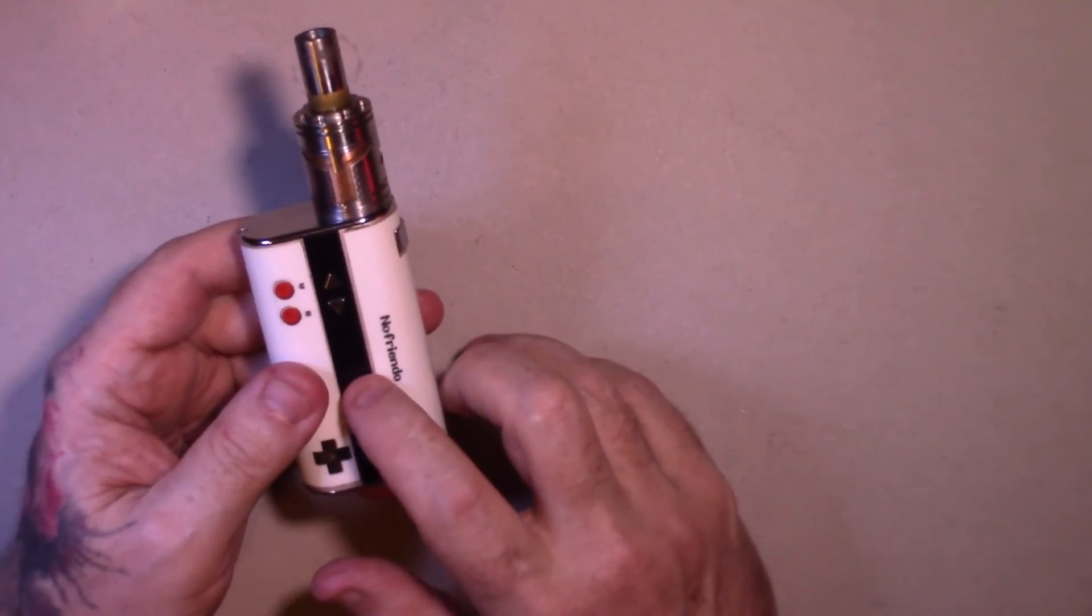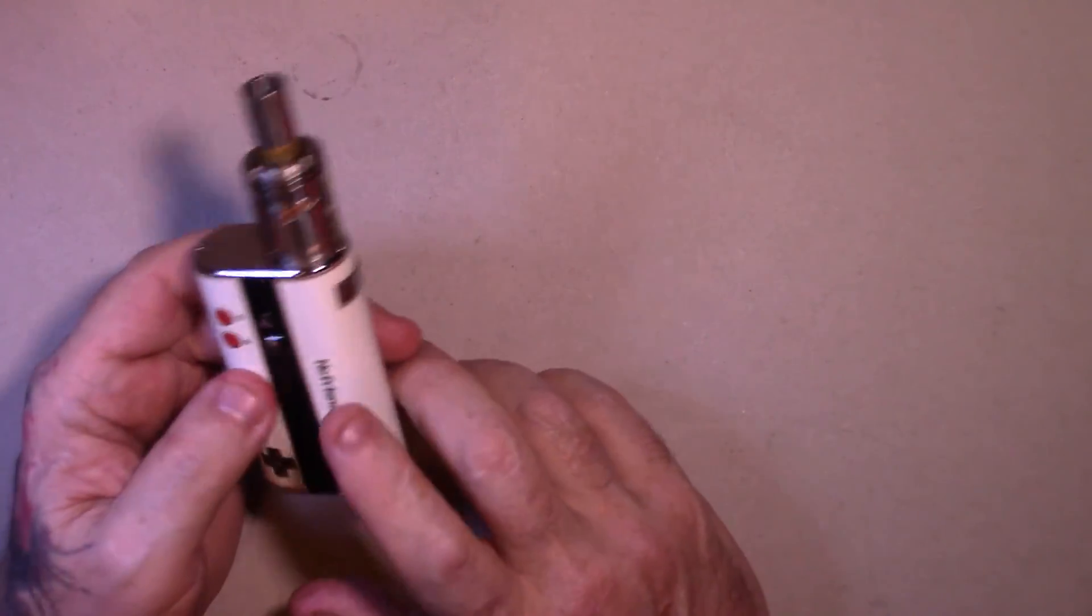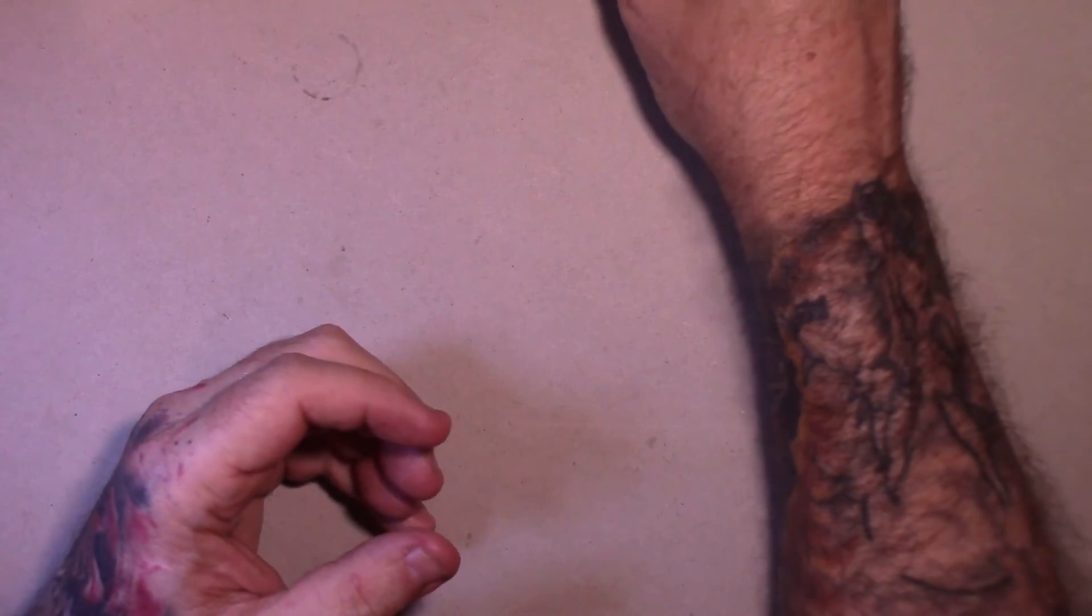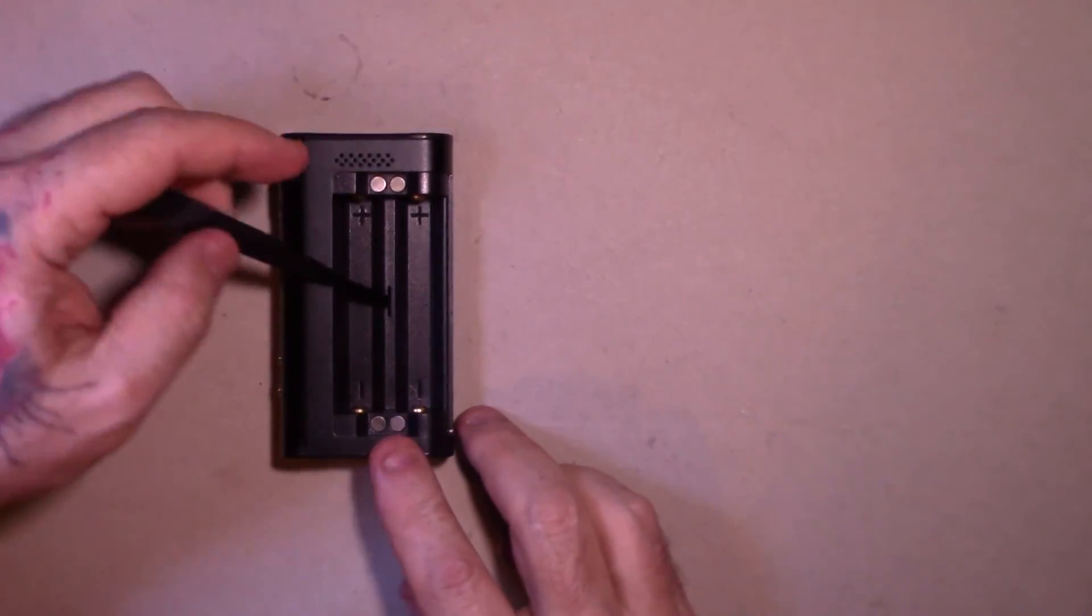So most people, most beginners, just use the wattage mode. That's kind of run down between wattage and voltage. The next thing you'll need to know about your mods is your 18650 batteries.